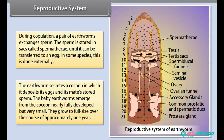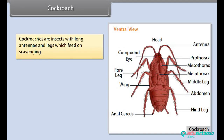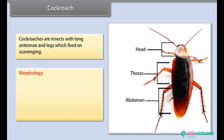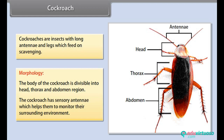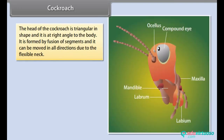Cockroaches are insects with long antennae and legs which feed by scavenging. The body of the cockroach is divisible into head, thorax and abdomen. The cockroach has sensory antennae which help them monitor their surrounding environment. The head of the cockroach is triangular in shape and is at right angles to the body. It is formed by fusion of segments and can be moved in all directions due to the flexible neck.